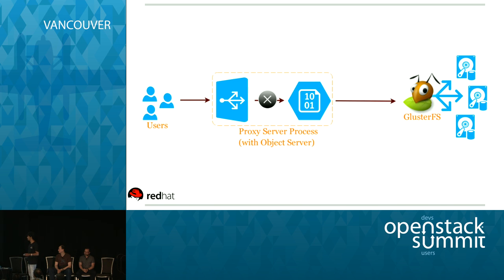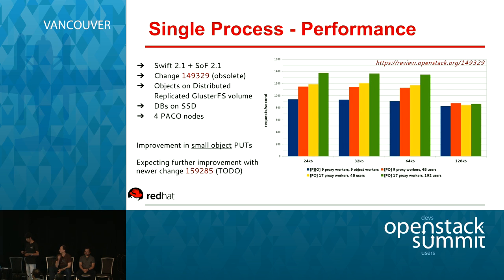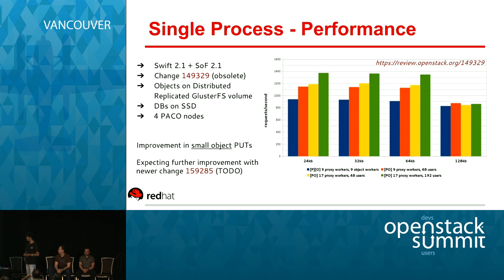What we're getting at is removing that hop between proxy and object servers so they run as a single process. The client request accepted by the proxy is sent directly to the clustered file system backend. We did SSbench benchmarks recently with GlusterFS and an older version of Swift and Swift on File. There is significant improvement for small file object puts, and improvements can be leveraged when you have multiple proxy workers and multiple users accessing the cluster simultaneously.